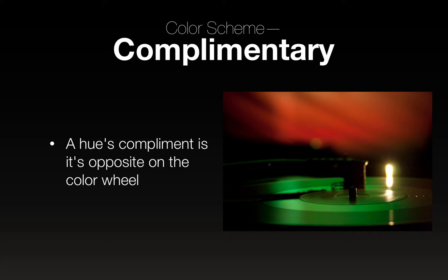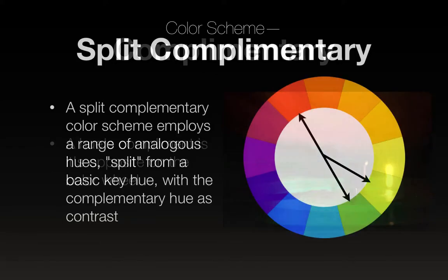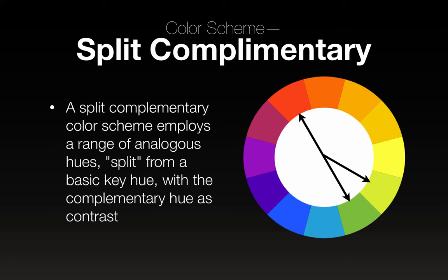Here's a design that uses complementary color. Split complementary is a color scheme that uses a range of analogous hues split from a basic key hue with the complementary hue as a contrast. Basically you've got your complement and then you take one tone and split it off. That's how cooler.adobe.com does it — and sometimes the complement itself doesn't even appear in the color scheme. Both versions are valid. You're probably going to be using the interactive color wheel on Adobe's website, and this is what they're going to show you.